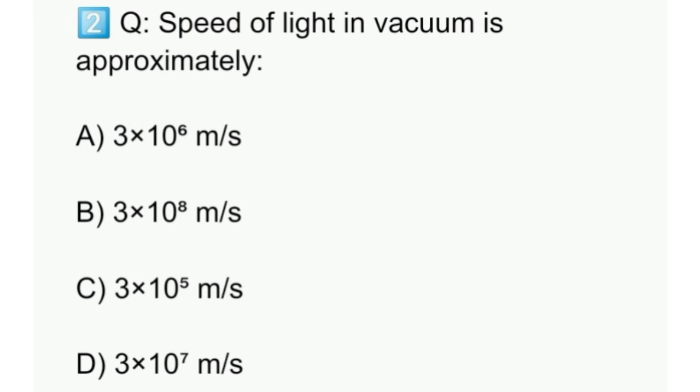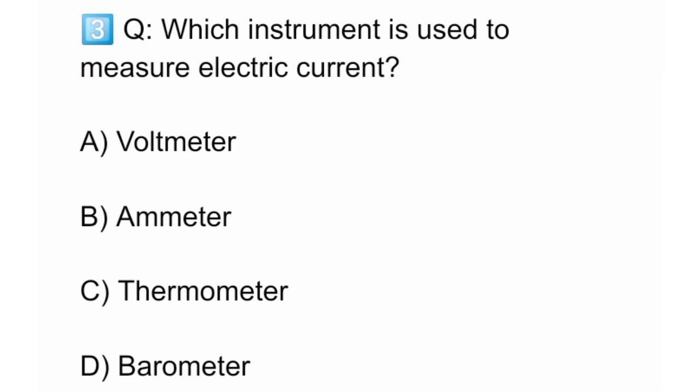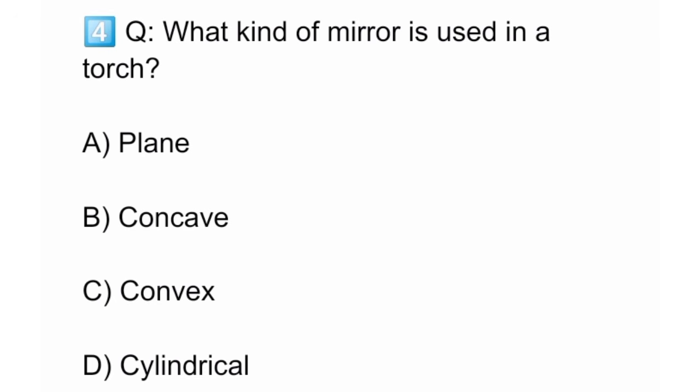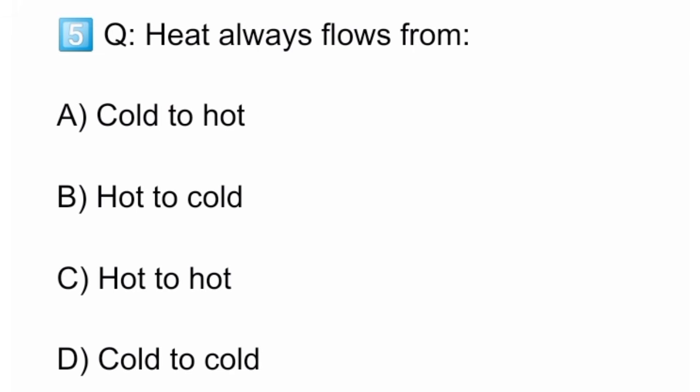Two: Speed of light in vacuum is approximately. Three: Which instrument is used to measure electric current? Four: What kind of mirror is used in a torch? Five: Heat always flows from.